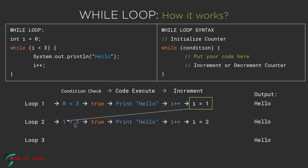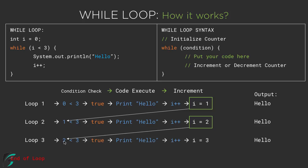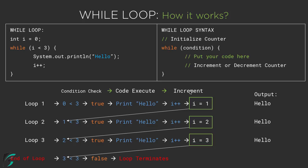At the start of loop 2, i is 1. 1 is smaller than 3, so the condition is true again. We print hello and increment the counter, so i becomes 2. In loop 3, 2 is smaller than 3 — condition is true again — we print hello and increment the counter to 3. When loop 4 is about to start, 3 is not smaller than 3, so the condition is false and the loop terminates. The result is hello printed 3 times in the output.